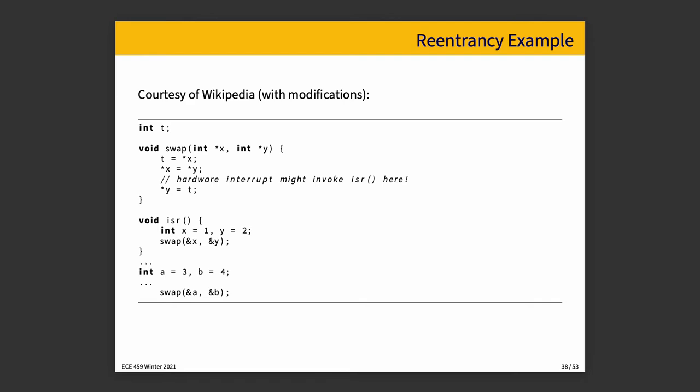And so a reentrancy example, courtesy of Wikipedia, again, just in C for the sake of it, is that if you're swapping something and there's a possibility of an interrupt, say a hardware interrupt, or catching a Control-C handler or something like that, there is a distinct possibility that something could go wrong.